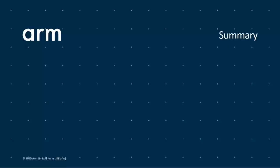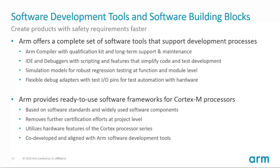Let me summarize the presentation. With our software tools and software building blocks, we make it really easy to create products that require safety. We support the development process with compiler, IDE, and debuggers. Simulation models are today often an integral part of the development process — for example, automotive projects frequently request them. Our innovative debug adapters support for example TestIO for automated validation runs. Our tools are complemented by the runtime system that I described. It is based on CMSIS, a widely used software standard. We utilize the hardware features of the Cortex processors and our customers do not need to worry about tools as we supply a complete system.